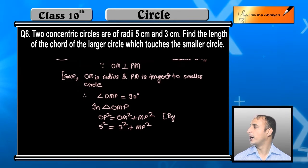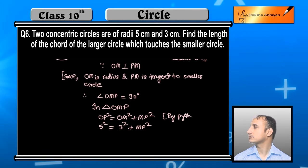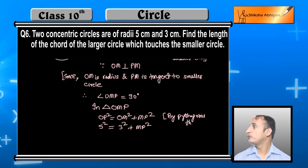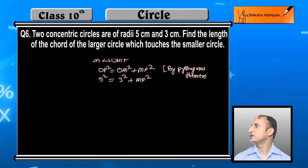This is by Pythagoras theorem. Now students, 5 square is 25 and 3 square is 9, so 25 is equal to 9 plus MP square.